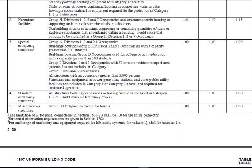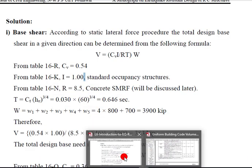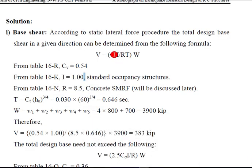For standard occupancy we take it one, so it depends on the type of the structure. So here, now CV is 0.54, I is one. Now the R value is 8.5, we take SMRF 8.5.